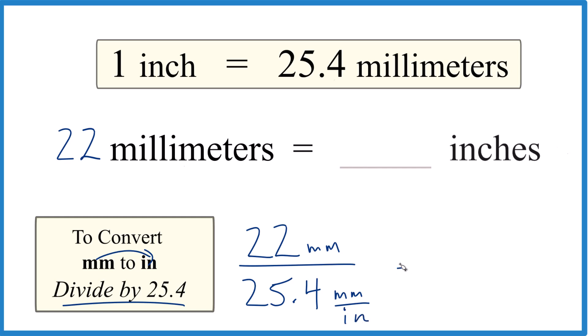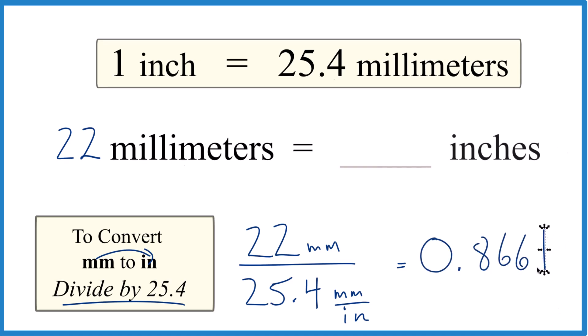Now we just divide 22 by 25.4, we get 0.8661, and let's round that to 0.866.